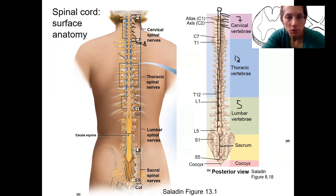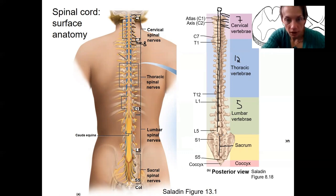Then we go to the first thoracic, and there are going to be 12 of those that correspond to the 12 vertebrae — 12 thoracic spinal nerves, five lumbar, five sacral, and one coccygeal.